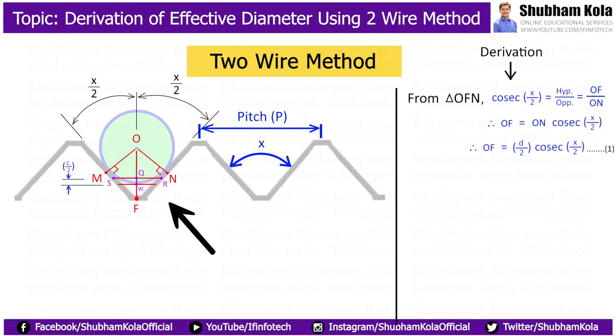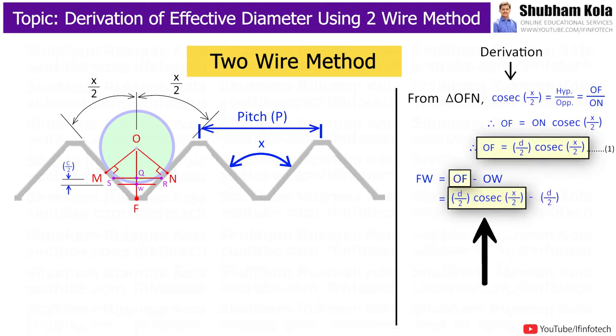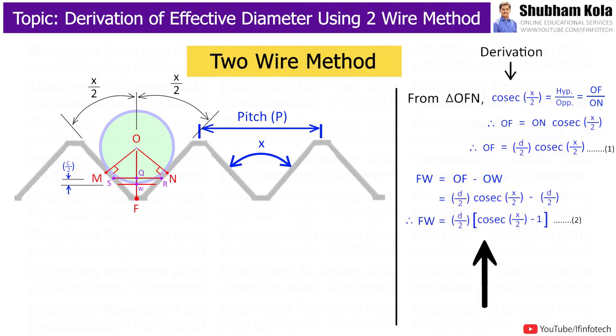And then we have taken distance Fw, which is equal to distance Of minus distance Ow. Here I will put Of from equation 1, and it becomes Fw is equal to d by 2 cosec alpha by 2 minus 1. This is our second equation.